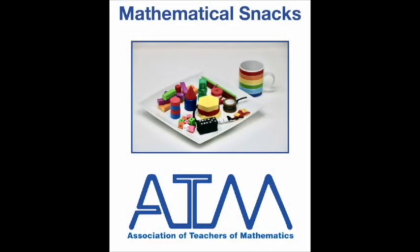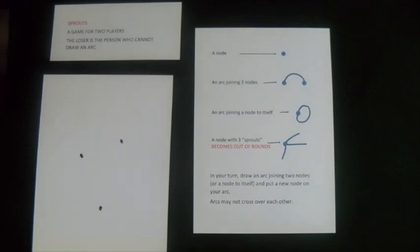This is a mathematical snack from the Association of Teachers of Mathematics. This is a game for two players called Sprouts. Start with any three marks on a piece of paper, we call these nodes.